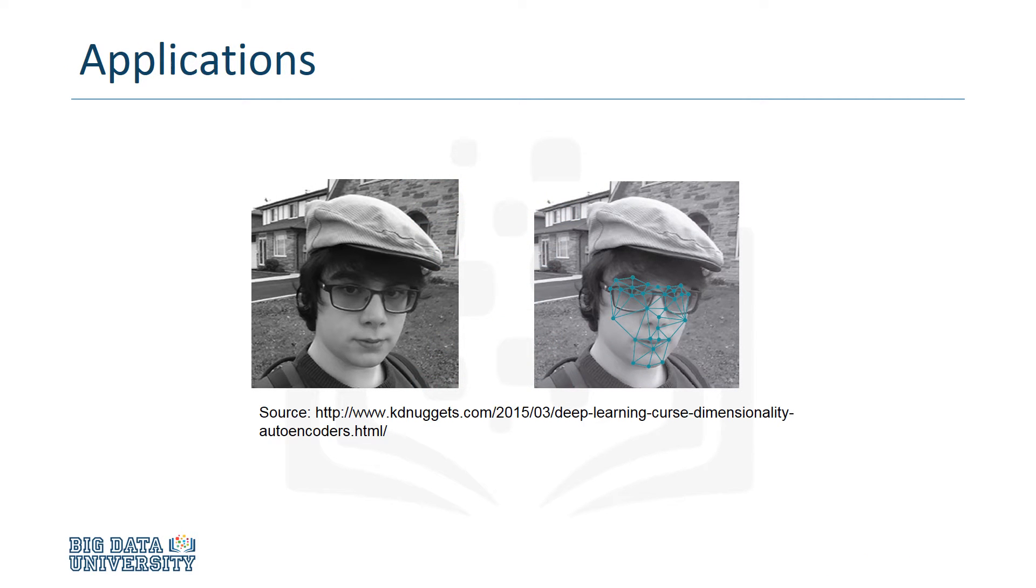An autoencoder is a type of unsupervised learning algorithm, so it will find patterns in a dataset by detecting the key features. In this example here, you can see how it would detect the key features that make up a face.